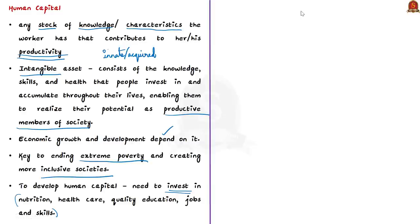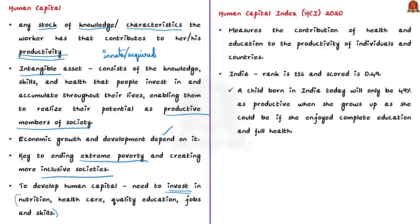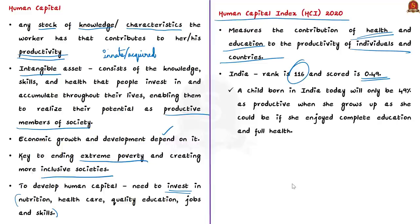India's position in investment in human capital interventions is not appreciable, as visible in its rank and score in the Human Capital Index 2020. The index measures the contribution of health and education to the productivity of individuals and countries. India's rank is 116th with a score of just 0.49, meaning a child born in India today will be only 49% as productive when she grows up as she could be if she enjoyed complete education and full health.